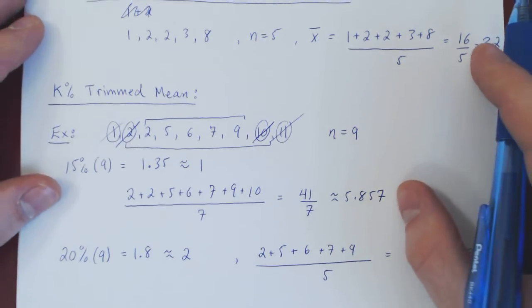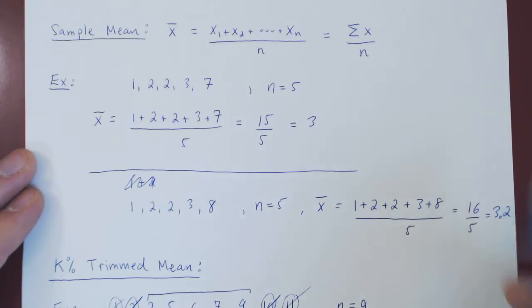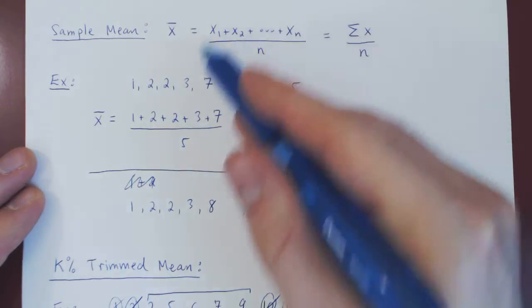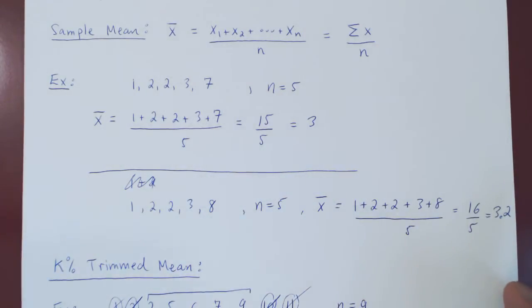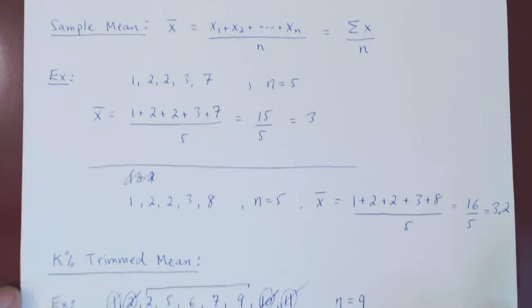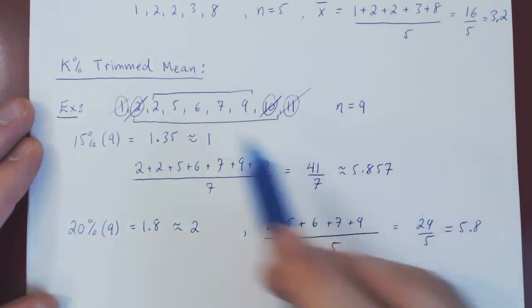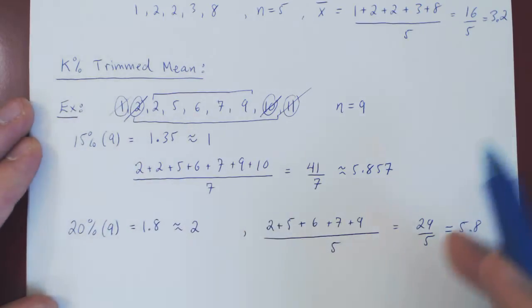Now those two are really the most important ones. First, the sample mean, the average of your sample. And if there are some outlier values and you can justify dropping some of the smallest and largest values, then you can fall back on the k percent trimmed mean. The following two measures are much simpler but not as important.